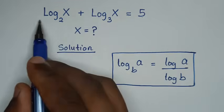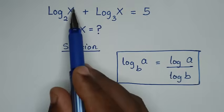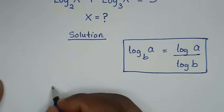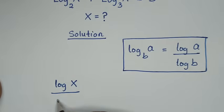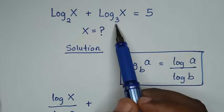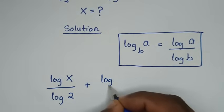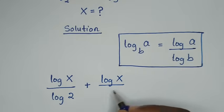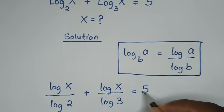From this form we change into the new form. So log of x base of 2 is the same as log of x over log of 2, then plus log of x base of 3 we change into log of x over log of 3, is equal to 5.